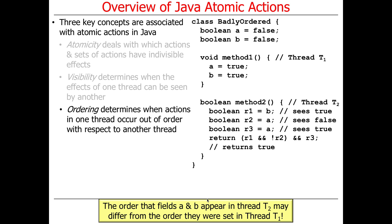Due to weakly ordered memory semantics, thread T2 might see B have the value true but A have the value false, even though A and B were set in the order A=true, B=true. The memory may be propagated to the other thread in a different order. Moreover, after reading A the first time and seeing false, you might read it a second time and see true, even though nothing was done to A. Ordering says: what's the order in which things occur? Without careful synchronization, we don't know.